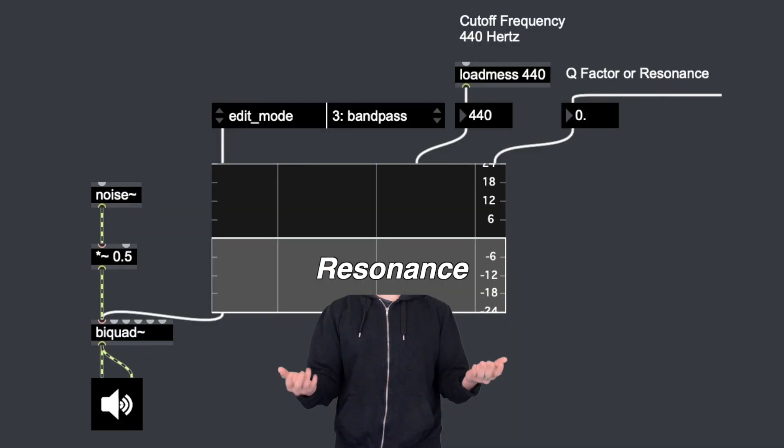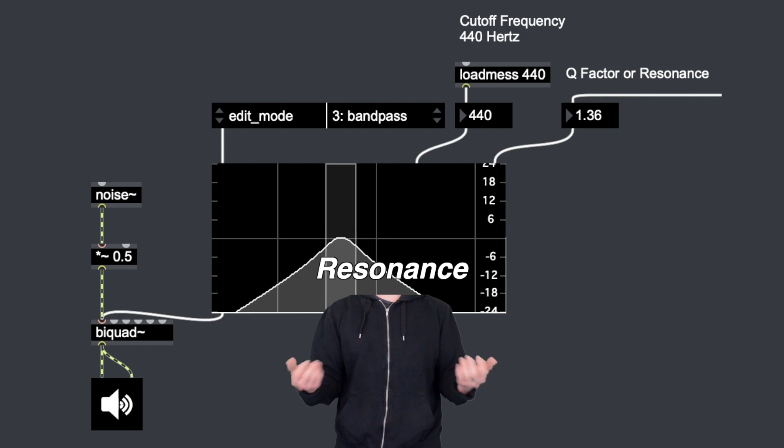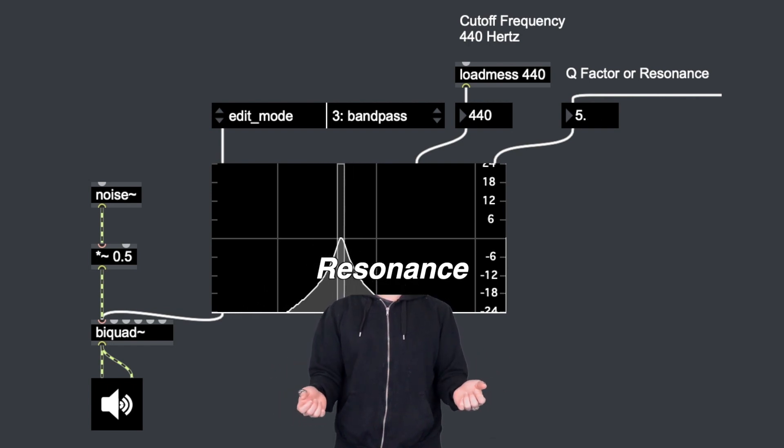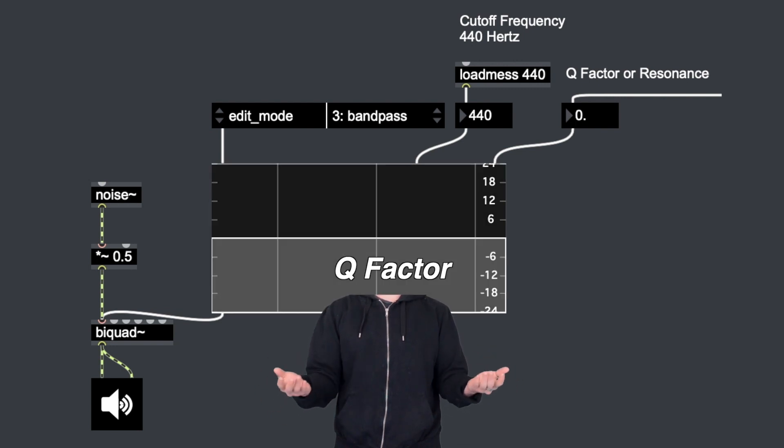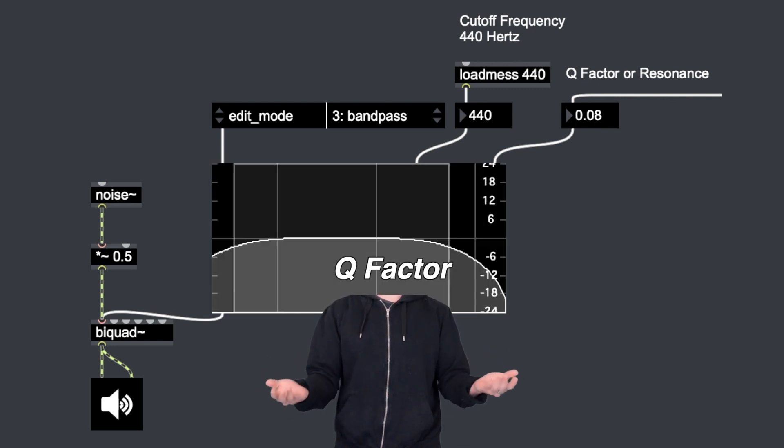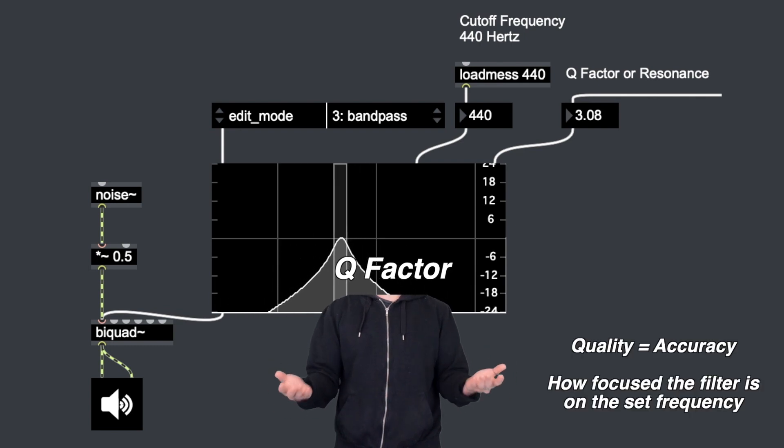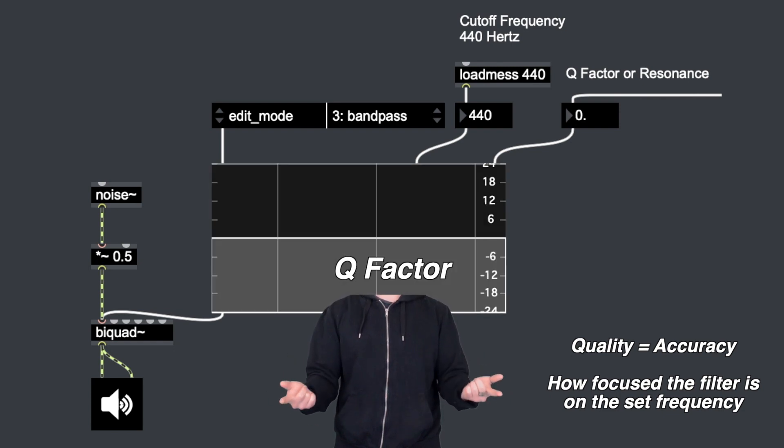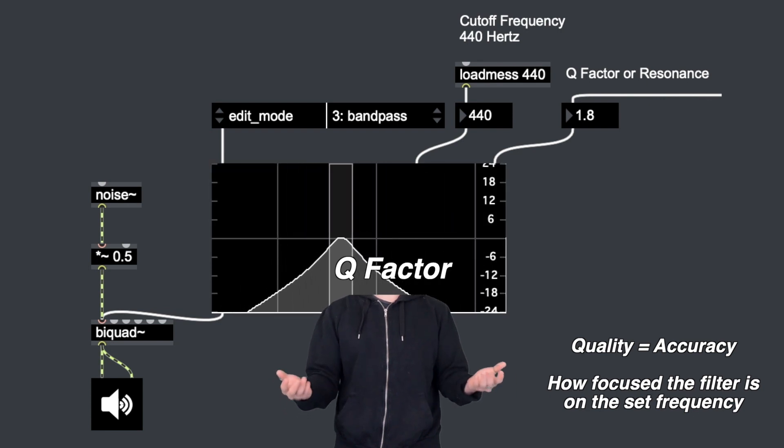And we can use resonance control to set how far above and below the center frequency the filter will allow sounds to pass. This filter parameter is also called the quality factor or better known as the Q factor. This determines how selective the filter is. The range becomes wider as we lower the value of the Q factor, and the higher the Q factor, the narrower the filter is.